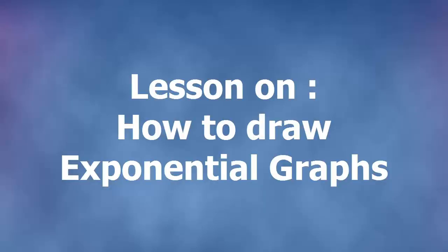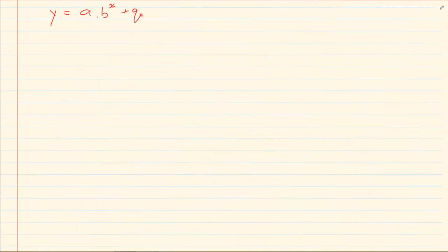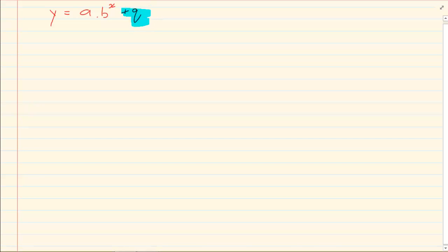Hi and welcome to my maths class. Today we are drawing exponential graphs. The standard equation is y = a times b to the power of x plus q. Like you had done with the hyperbola, q is an asymptote — and here q is also an asymptote.